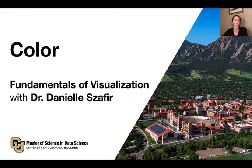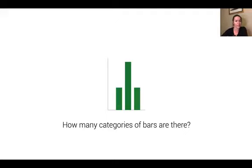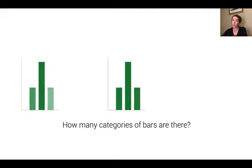I want to start our discussion of color with a fairly simple example. Here I have a bar chart and I want to distinguish how many different categories of bars I have. In this case, all my bars are green, so I would assume I probably have one general category of bar. I might try to distinguish between different categories by changing how light or dark the bars are, but it's unclear — do I just have green bars of different values or different groups of bars?